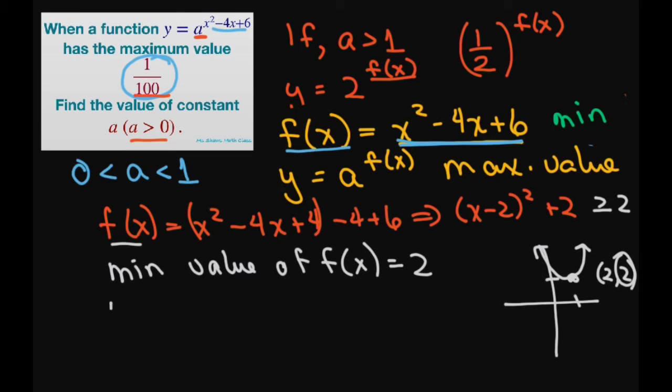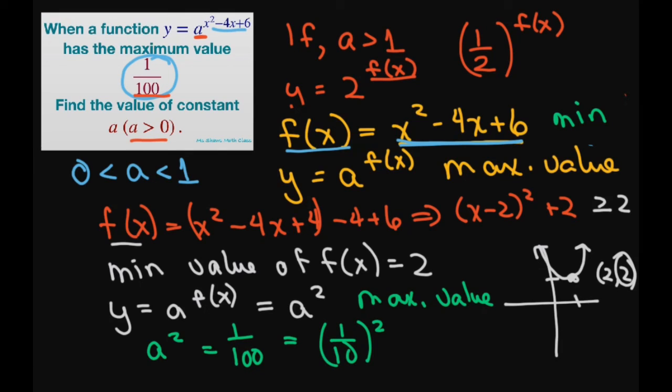Therefore, the maximum value of y equals a to the power of f of x equals a squared. Therefore, a squared, this is going to be your maximum value. Therefore, a squared equals our maximum value of 1 divided by 100, which equals 1 divided by 10 squared. And our a is positive. Therefore, a equals 1 divided by 10. And that's your final answer.